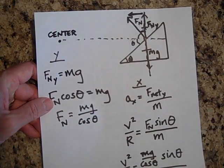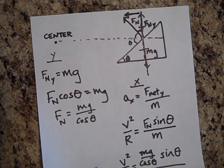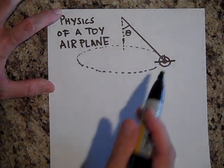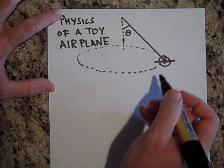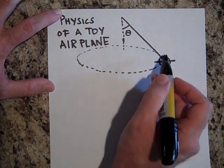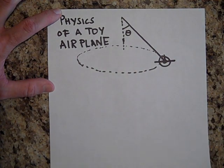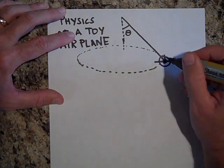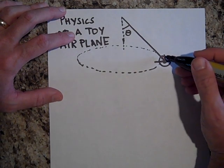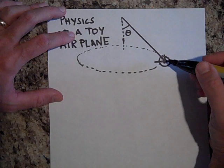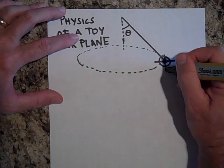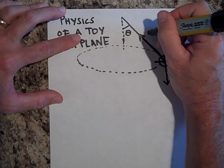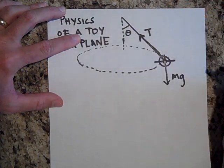That's the physics of a banked turn. Now let's talk about the physics of a toy airplane — it's very similar. Here's a toy airplane zipping around in a circle. The forces on the airplane include forward thrust and air resistance — those cancel at constant speed. The remaining forces are mg downward and the tension T in the string.